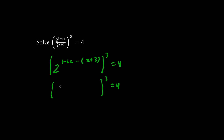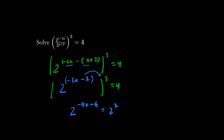We have base 2. Negative 2x minus x is negative 3x, and 1 minus 3 is minus 2. We're going to multiply this with 3. So we have 2 to the (negative 9x minus 6) equals 2 squared, which is 4. The bases are the same, so we can equate the exponents.